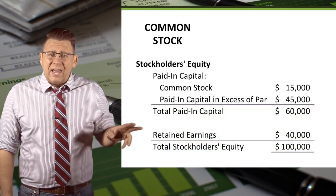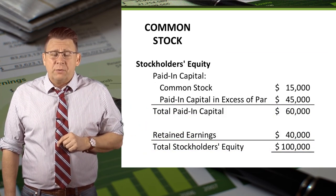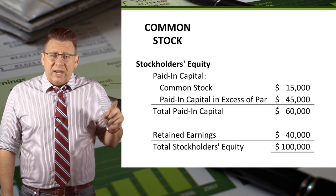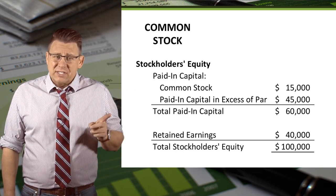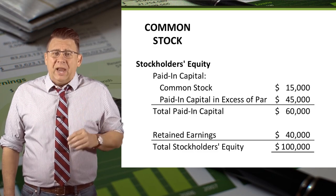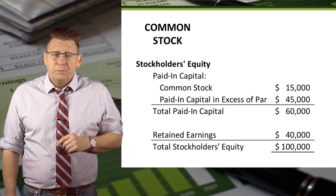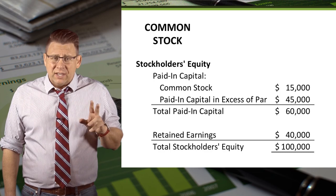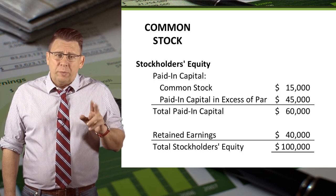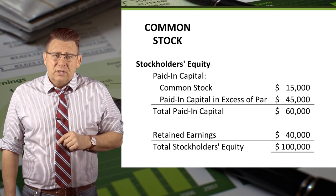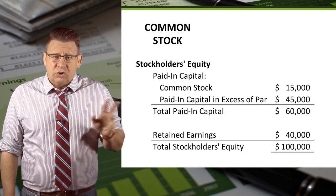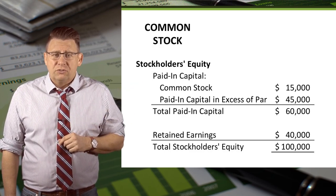From this last transaction, the stockholders' equity section would look like this. The paid-in capital section would show common stock at its par value and paid-in capital in excess of par. These two accounts together would equal the total paid-in capital balance. Retained earnings are also shown to complete the section.